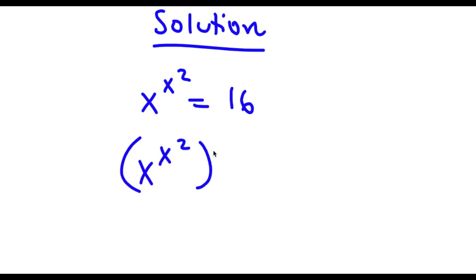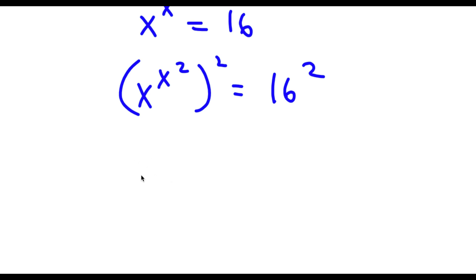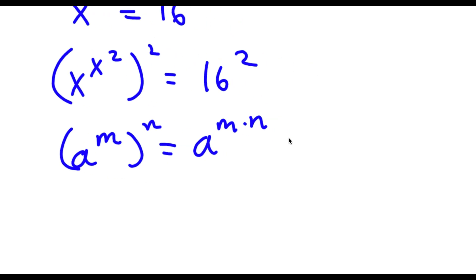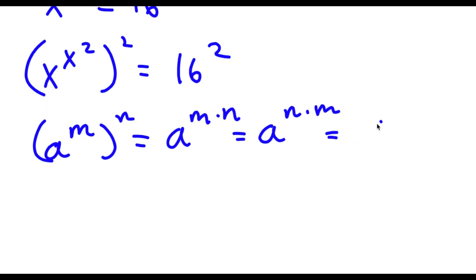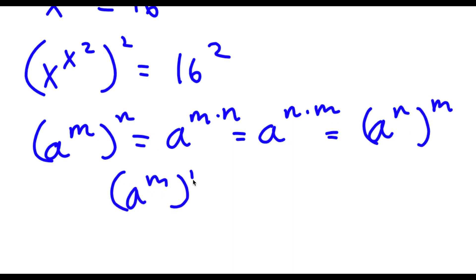So now I have x to the power of x to the power of 2, to the power of 2, is equal to 16 to the power of 2. An important property of exponents is that if I have something in the form a to the power of m to the power of n, this is equal to a to the power of m times n. And m and n are interchangeable, meaning a to the power of m times n is the same thing as a to the power of n times m. So a to the power of m to the power of n equals a to the power of n to the power of m.